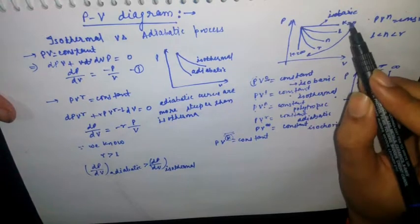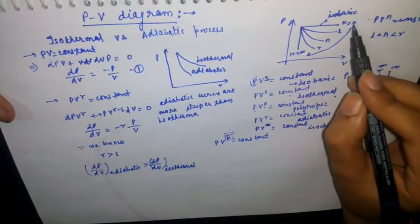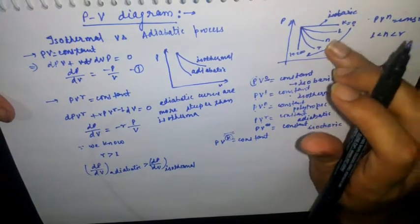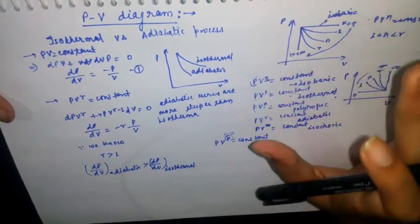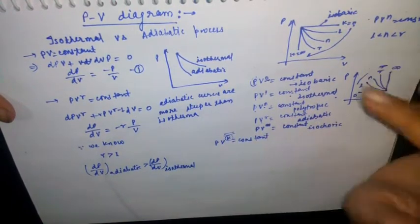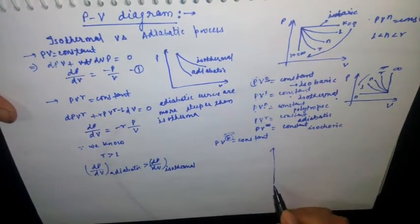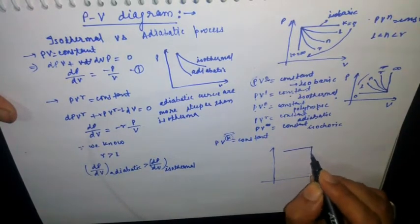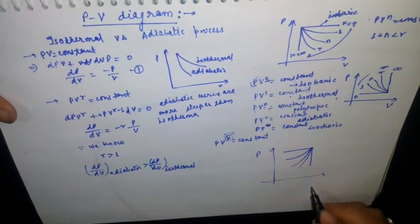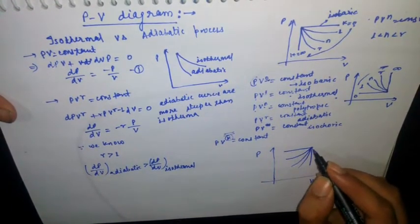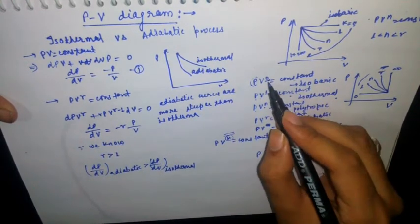Through the value of K we can draw all curves and name them correctly: zero, then increasing through one, n, gamma, and infinite. By drawing them in this order on the PV diagram we get all five curves. For example, the isobaric process is what we get when volume changes at constant pressure.